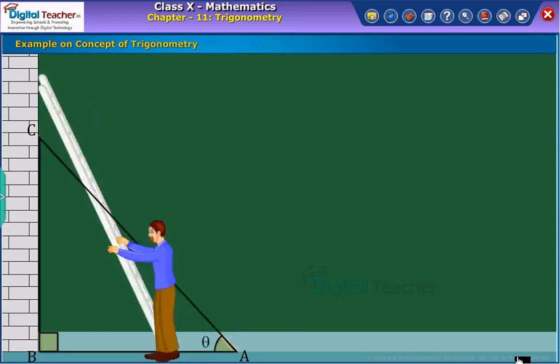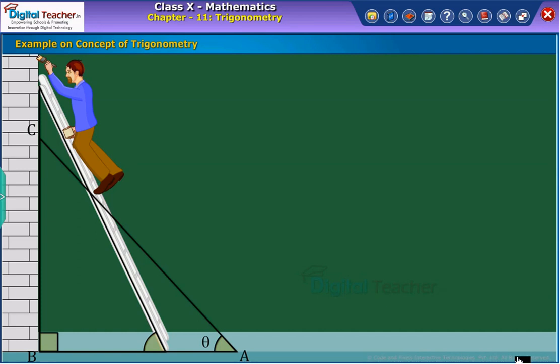If the person wishes to whitewash the highest point on the wall, what happens to the angle made by the ladder with the ground? What will be the change in the distance AB?